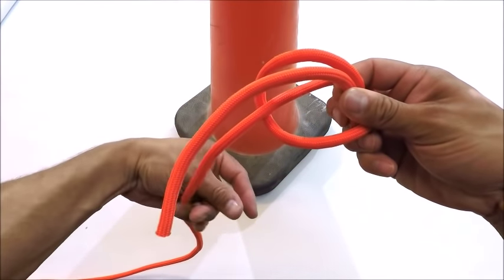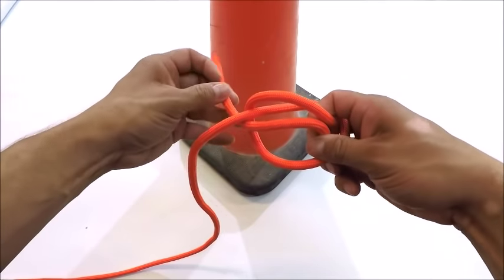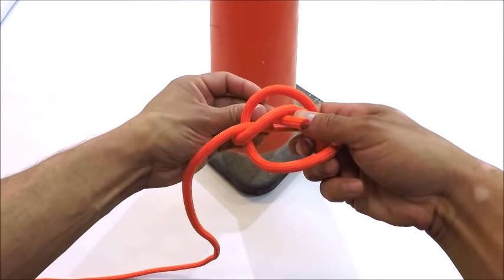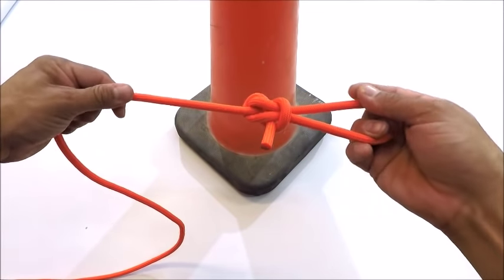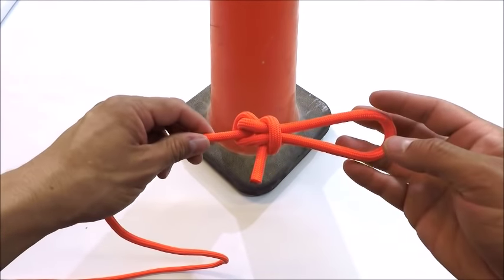And then we're going to reach from behind and grab our free end and stick it through that window. There we go. When we pull everything together, there is our angler's loop.